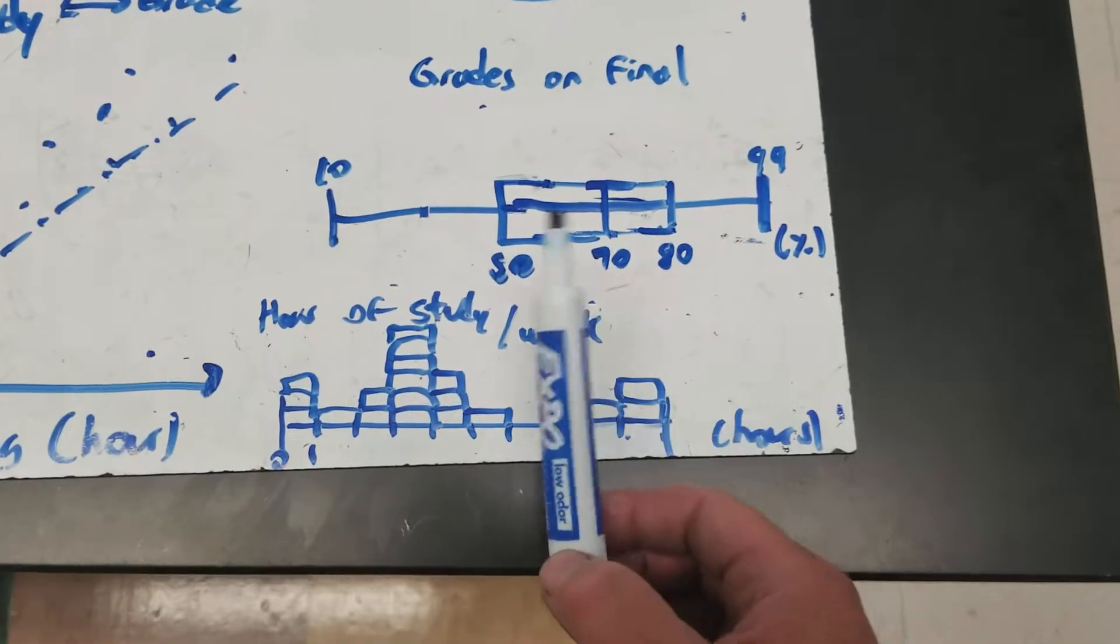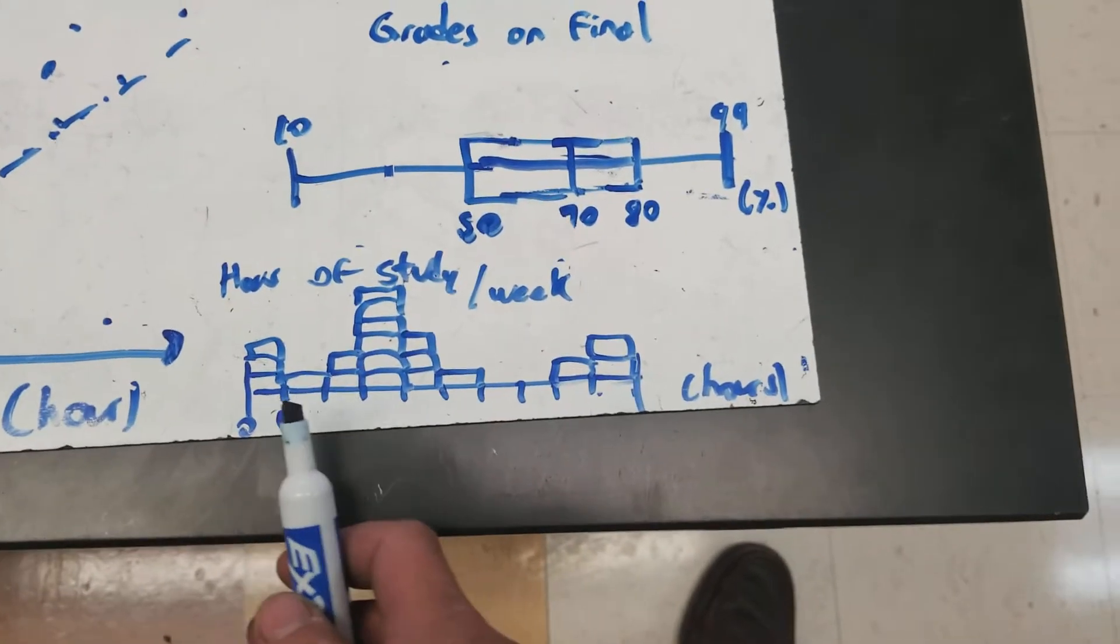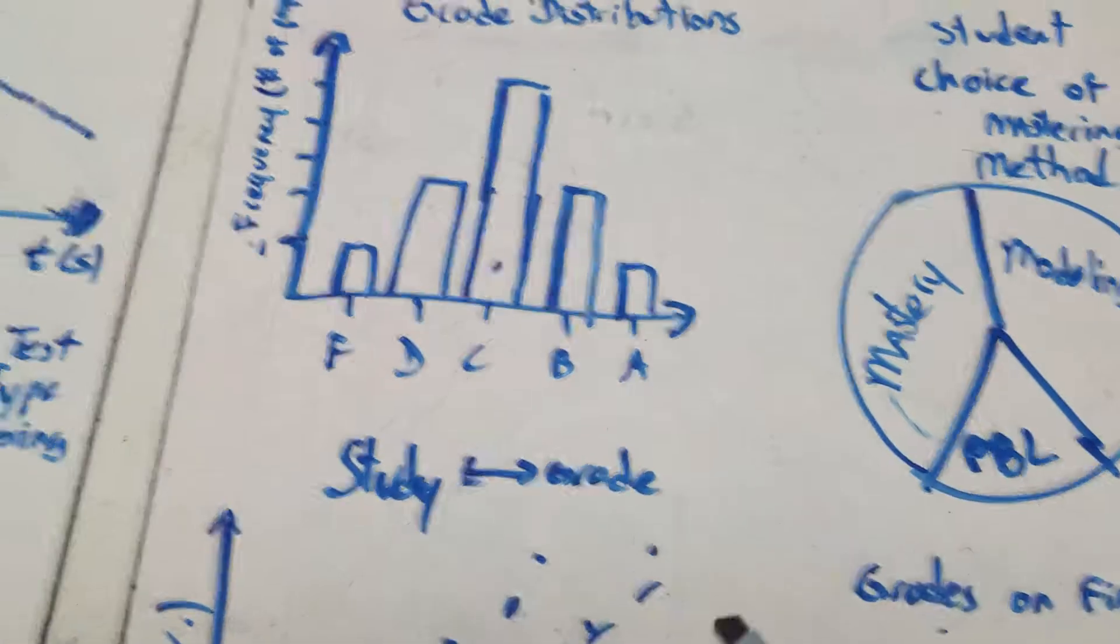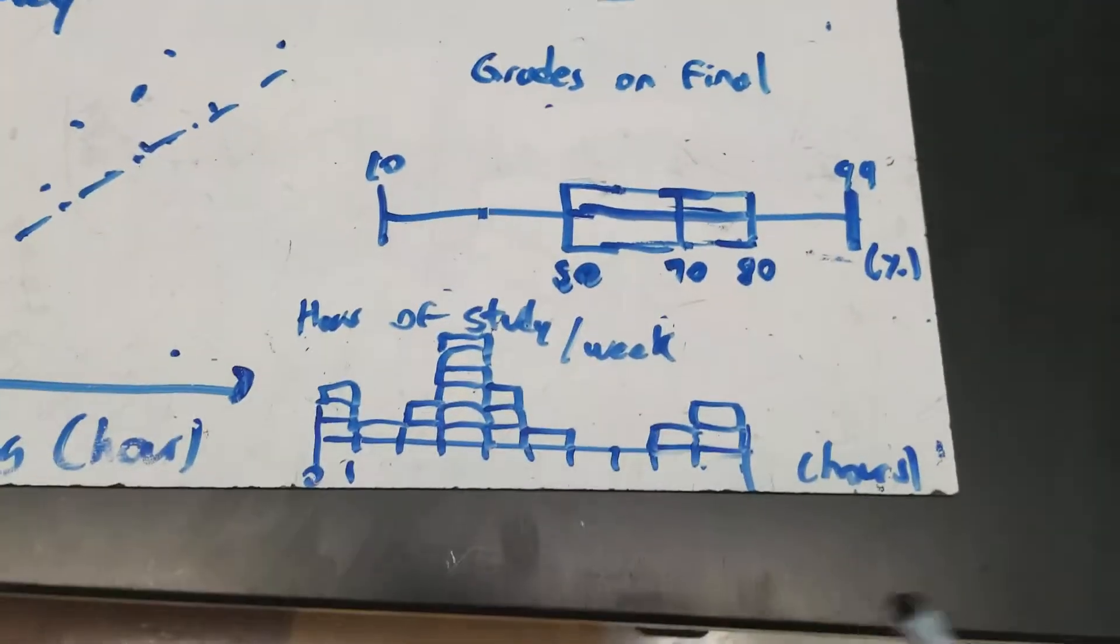And if I ever wanted to create one, I'll definitely teach you how to do that. Histograms are also used a lot to show the distribution of data. This is kind of like a histogram up there, in a way, because it shows how many students are on each frequency. So it's kind of like a histogram. But you basically look at this one.